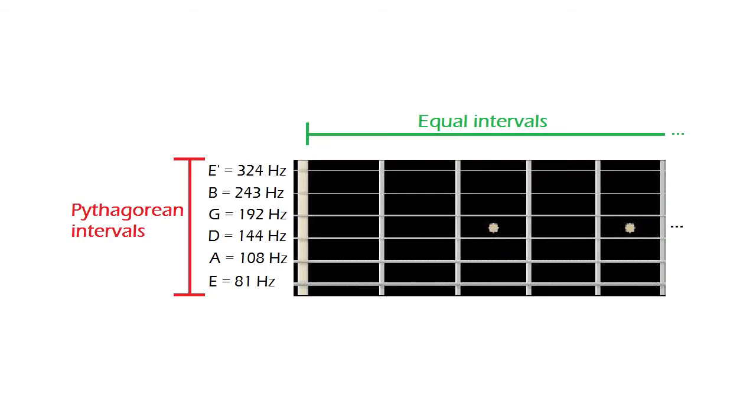Tuning your strings to Vertus Tuning gives you a weird mix of Pythagorean intervals and equal intervals. The Pythagorean intervals would not be maintained in the frets, and notes that should be the same in different strings would have different frequencies.